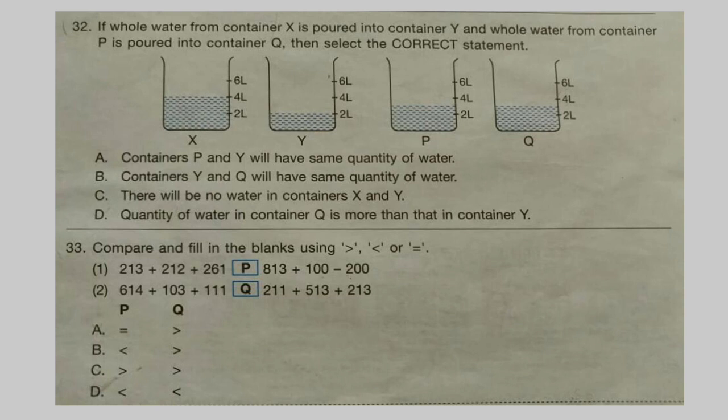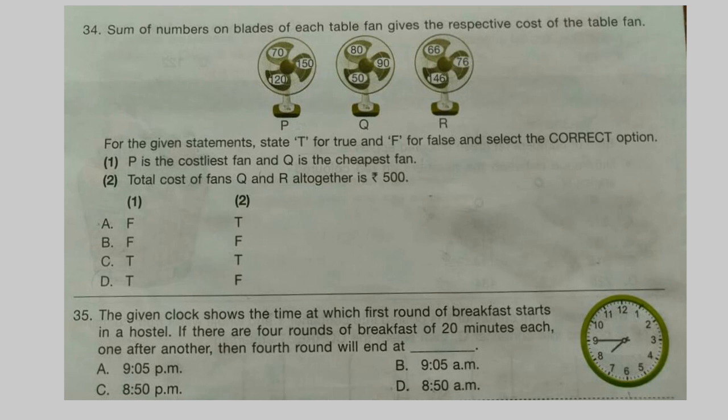Question 33: Compare and fill in the blanks using the sign. Question 34: Sum of numbers on blades of each table fan gives the respective cost of the table fan. Questions 35: For the given statements, state T for true and F for false and select the correct option. P is the costliest fan and Q is the cheapest fan. Question 36: Total cost of fans Q and R altogether is 500.